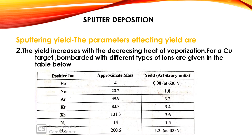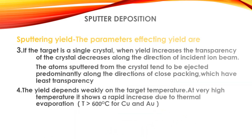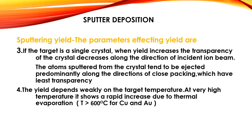The second parameter: the yield increases with decreasing heat of vaporization. For example, a copper target bombarded with different types of ions is given in the table as an example. The third parameter: if the target is a single crystal, as the yield increases, the transparency of the crystal decreases along the direction of the incident ion beam. Atoms sputtered from the crystal tend to be ejected predominantly along directions of close packing, which have least transparency. The fourth parameter: the yield depends weakly on target temperature, but at very high temperatures it shows a rapid increase due to thermal evaporation — for example, above 600 degrees Celsius for copper and gold.